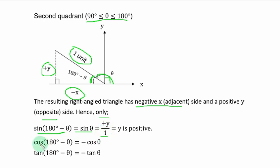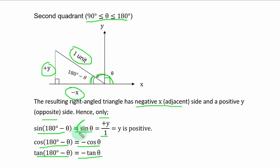Also, cos(180 degrees minus theta) is equal to negative cos theta, and tan(180 degrees minus theta) is equal to negative tan theta. Remember, in the second quadrant only sine is positive — you can see that cosine and tangent are negative, simply because of this negative x-axis adjacent.